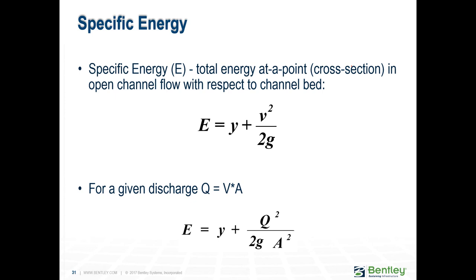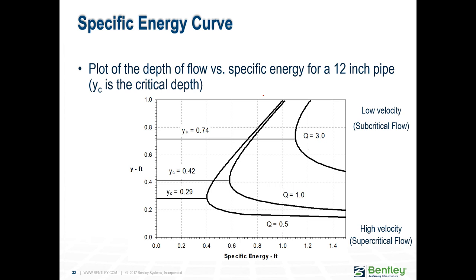Another concept we use when talking about flows is specific energy. Specific energy is the total energy at a point with respect to the channel bed — it's the depth of flow plus the velocity head. We always think about whether our flows are supercritical or subcritical. A supercritical flow is typically shallow but fast-moving high-velocity flow, whereas a subcritical flow has higher depth but slower-moving flow.